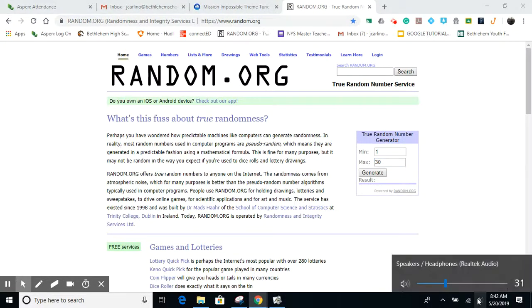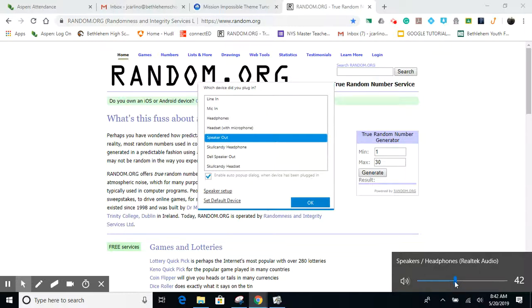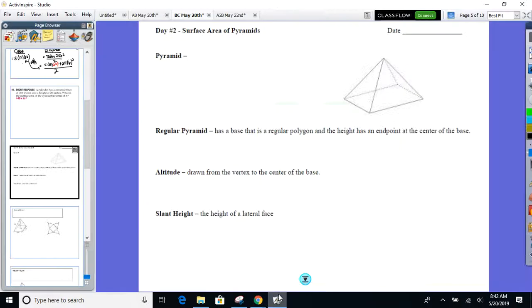All right, let's get this show going. Pyramid. Biggest difference between a prism and a pyramid, we're only looking at one base, and I'll tell you something about that base. It will always be regular. One base, always regular.